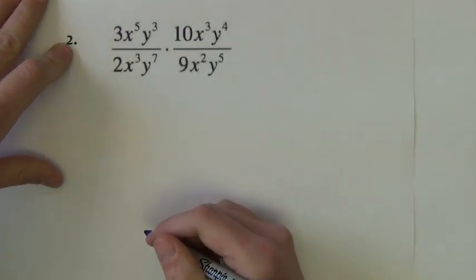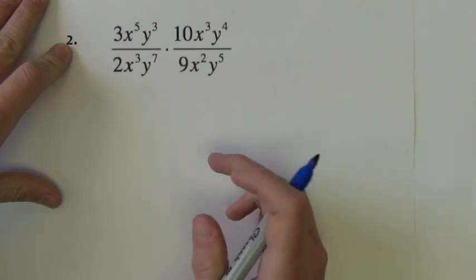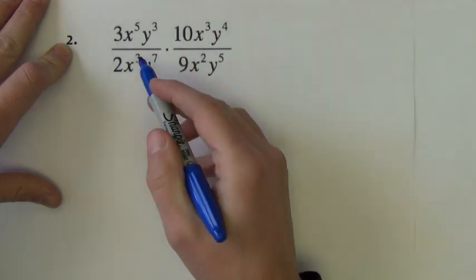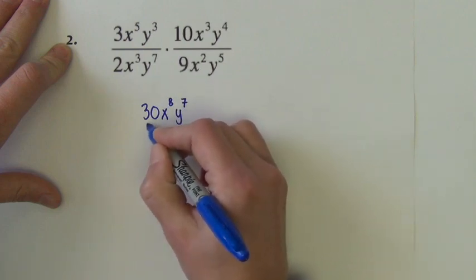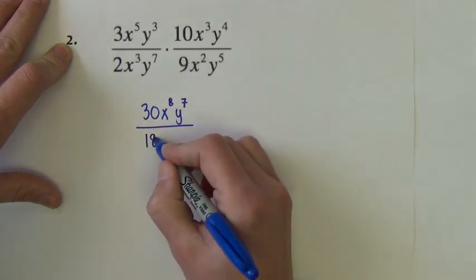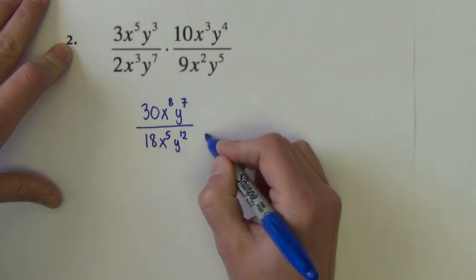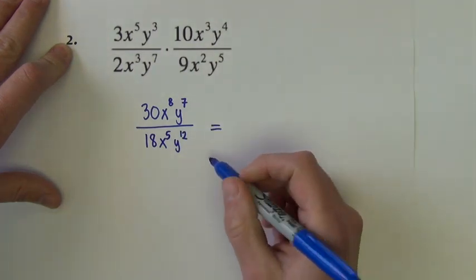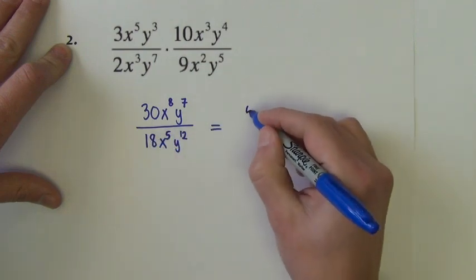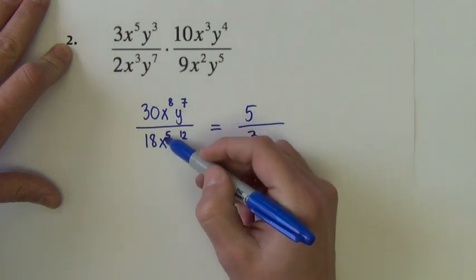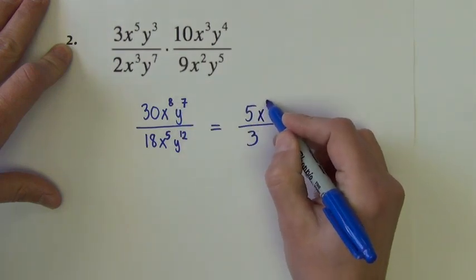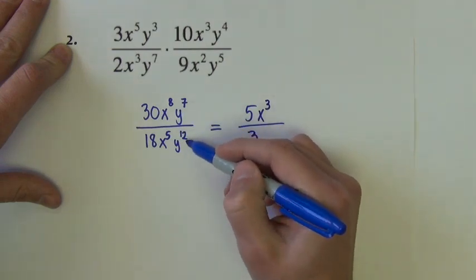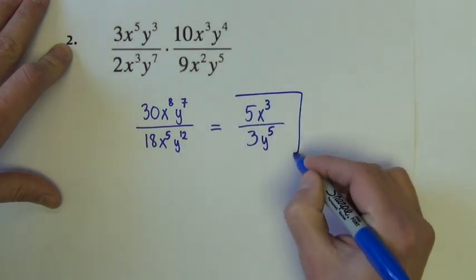Let's do one more of the same type. Multiply the numerators: 3 times 10 is 30, the x's add to x to the 8th, the y's add to y to the 7th. In the denominator: 2 times 9 is 18, x's add to x to the 5th, y's add to y to the 12th. Now reduce: 30 and 18 both divide by 6. The x on top is bigger, so 8 minus 5 equals 3 stays on top. The y on bottom is bigger, so 12 minus 7 equals 5 stays in the denominator. Final answer: 5x cubed over 3y to the 5th.